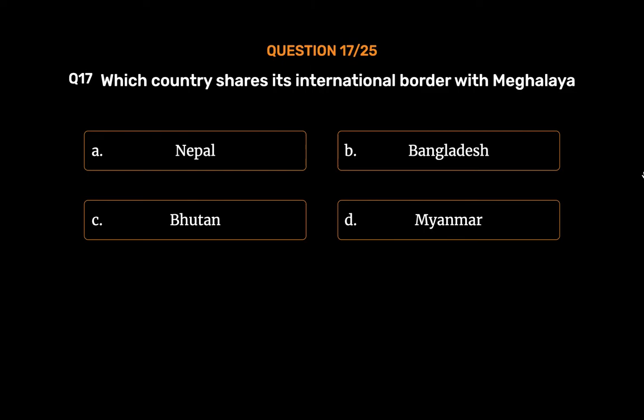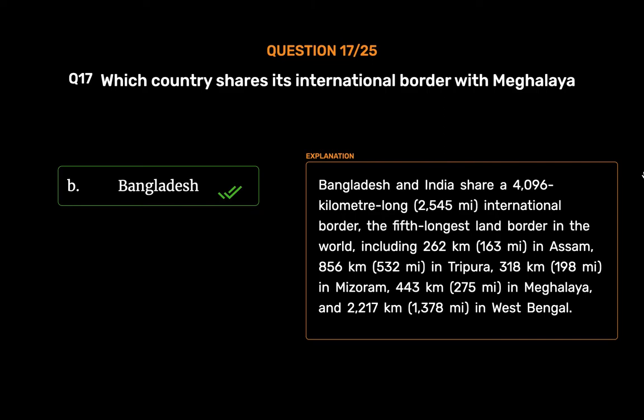The correct answer is Option B: Bangladesh. Bangladesh and India share a 4,096-kilometer-long (2,545 miles) international border, the fifth-longest land border in the world, including 262 kilometers in Assam, 856 kilometers in Tripura, 318 kilometers in Mizoram, 443 kilometers in Meghalaya, and 2,217 kilometers in West Bengal.